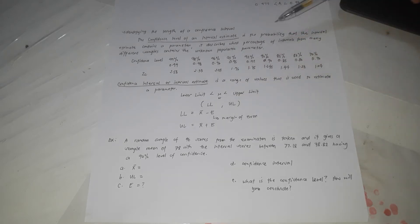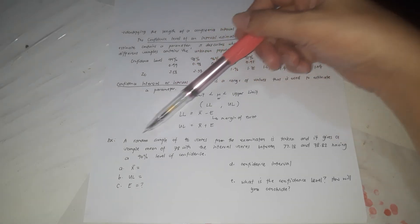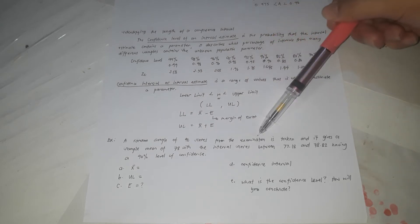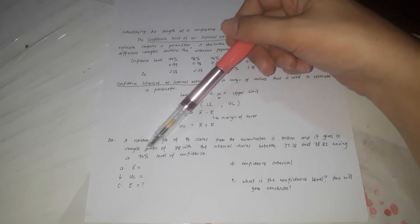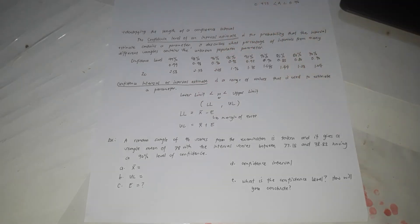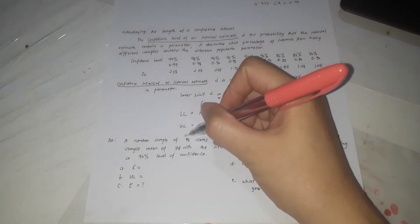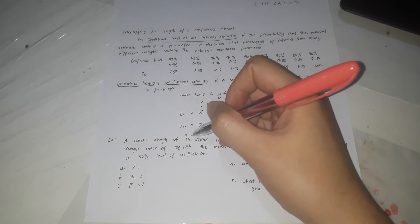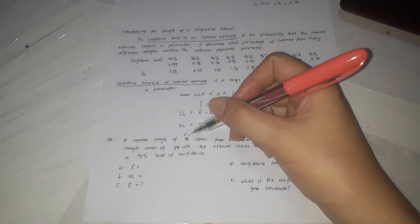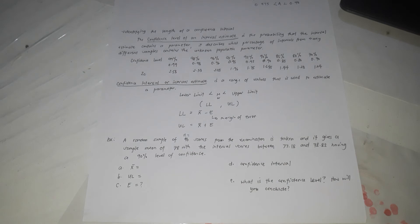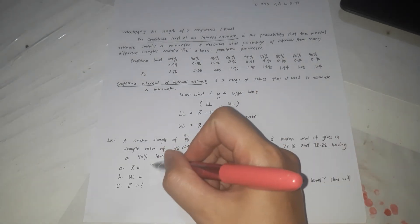To better understand this, consider the following example: a random sample of 46 scores from an examination gives a sample mean of 78, with the interval scores between 77.18 and 78.82, having a 90% level of confidence. For letter A, the sample mean X-bar is 78. Since N is 46 — which is greater than 30 — we use Z (normal distribution) rather than T.